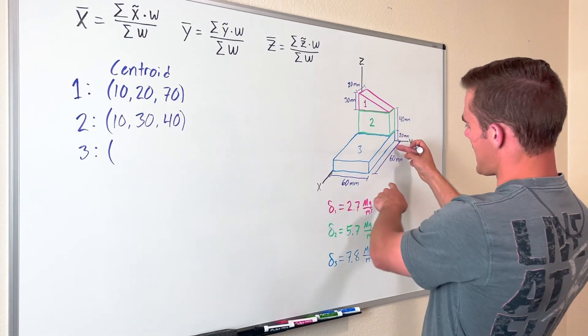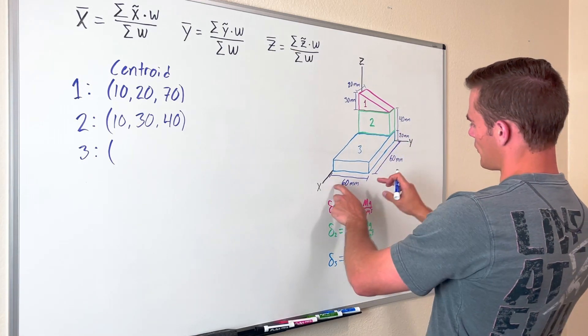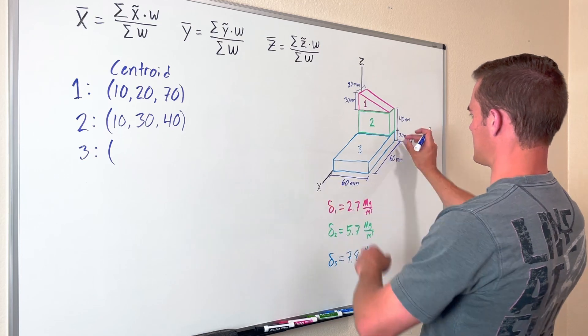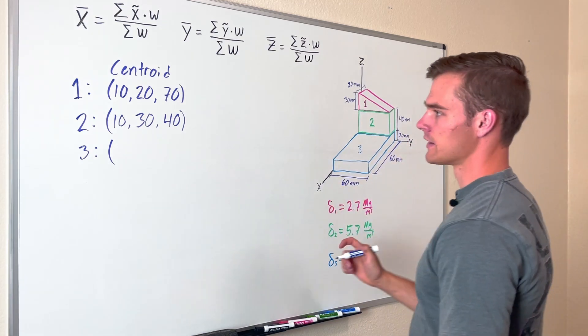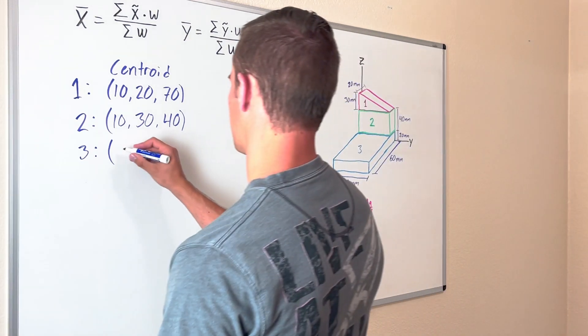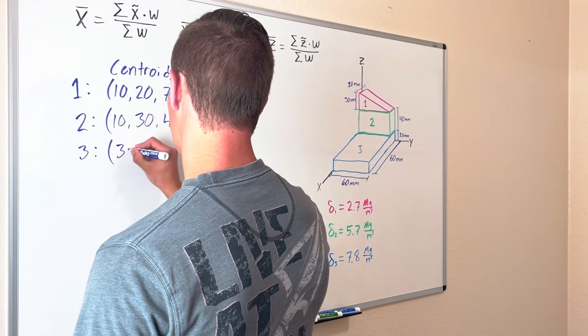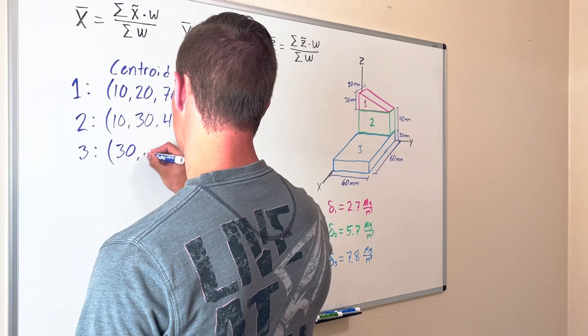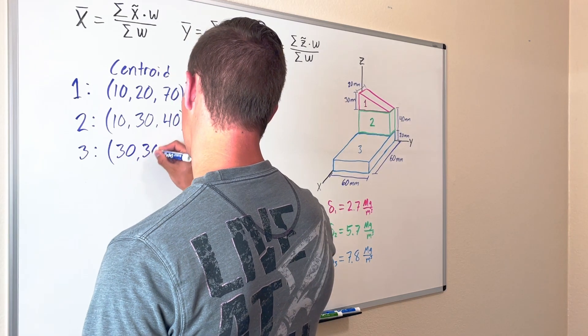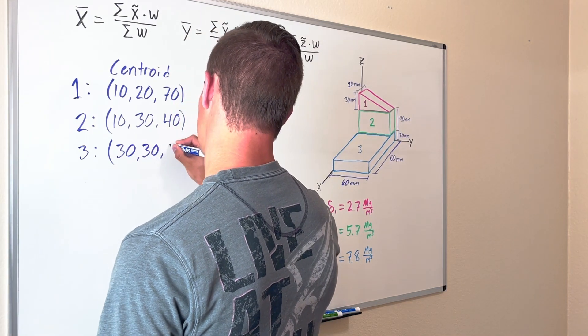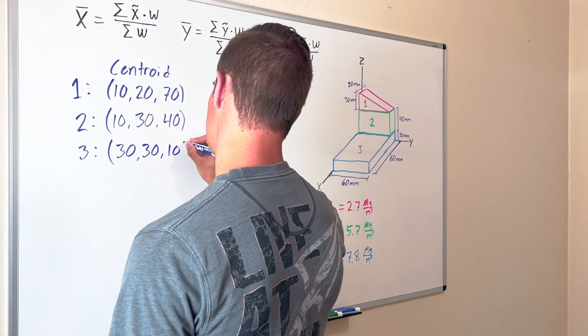For block three it's going to be halfway in the X direction, Y direction, and Z direction, and so that's going to be 30, 30, and 10.